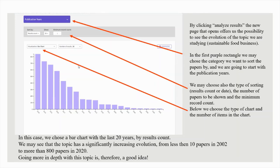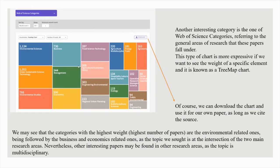Another interesting category is the Web of Science categories, referring to the general areas of research that these papers fall under. This type of chart is more expressive if we want to see the weight of a specific element — it is known as a tree map chart. We can download the chart and use it for our own paper as long as we cite the source. The categories with the highest weight — the highest number of papers — are the environmentally related ones, followed by the business and economics related ones, as the topic is at the intersection of the two main research areas. Nevertheless, other interesting papers may be found in other research areas, as the topic is multidisciplinary.